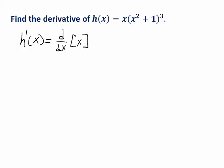So anyway, this means we're going to take the derivative of x and then multiply that by the other part without doing anything to it. Then we leave the x alone and we take the derivative of the other part, the x squared plus one quantity cubed.